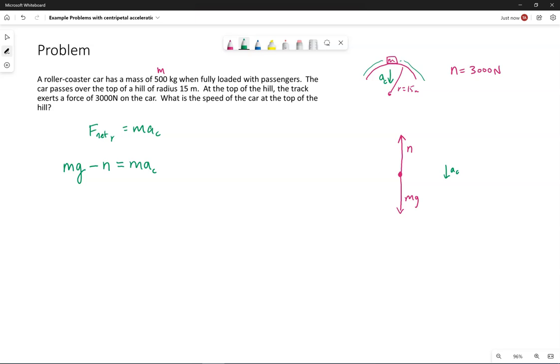We want the speed of the car, which means we want V, meters per second. Omega would say the angular speed. So speed, still just V.